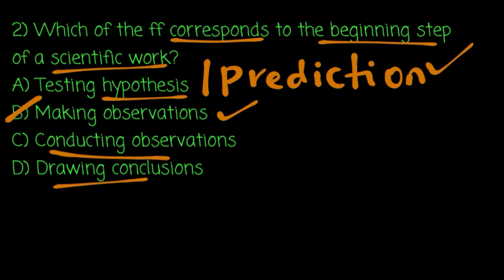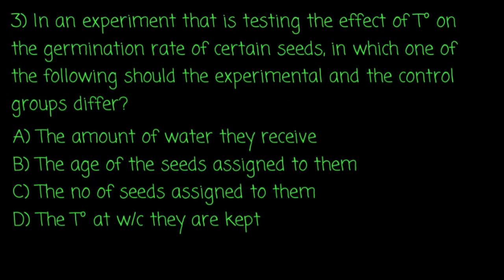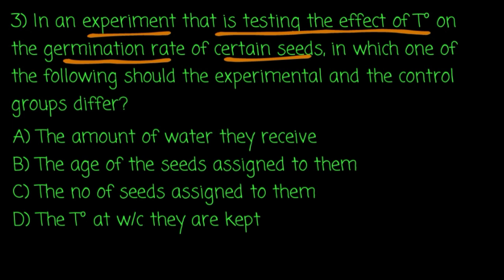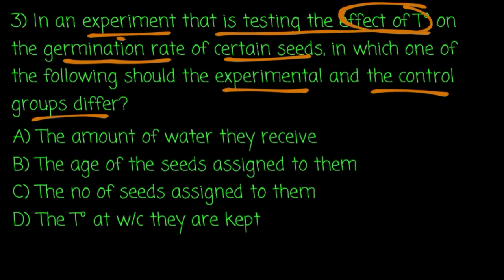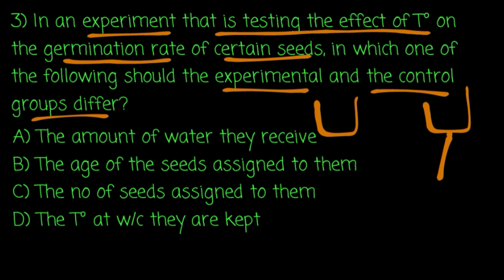In an experiment that is testing the effect of temperature on the germination rate of seeds, which one of the following should the experimental and the control groups differ in? Temperature is the variable affecting the germination rate. The experiment has a control group.